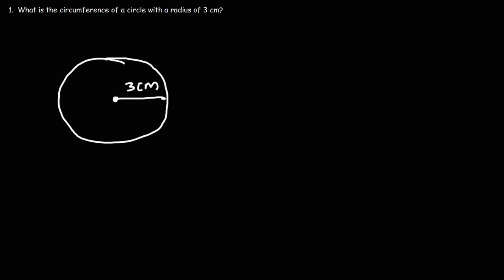Now, what is the circumference of the circle? The circumference of the circle is basically the distance around the circle. You could think of it as the perimeter of the circle. And there's a formula that we could use to calculate the circumference: C is equal to 2 pi times r, where r is the radius of the circle.